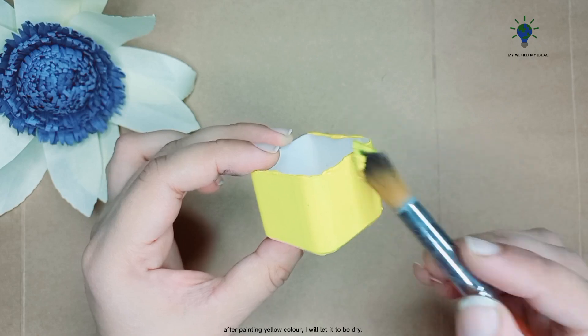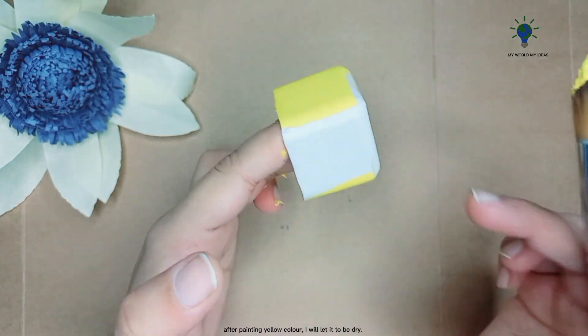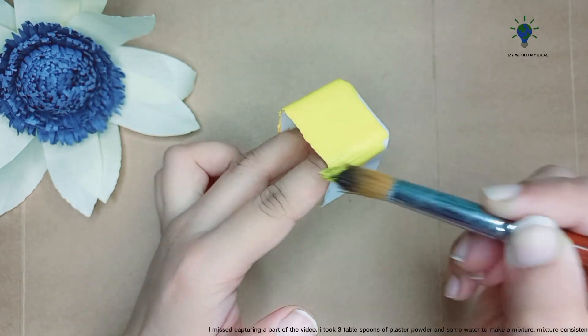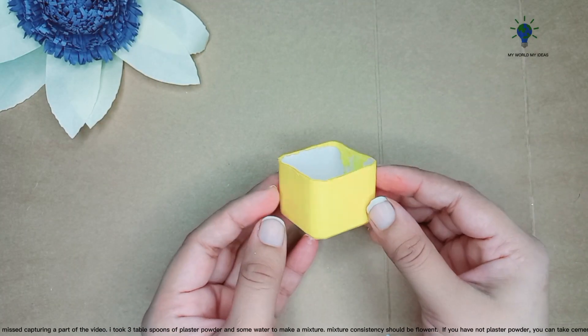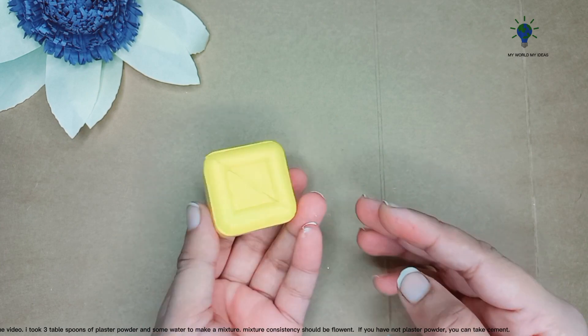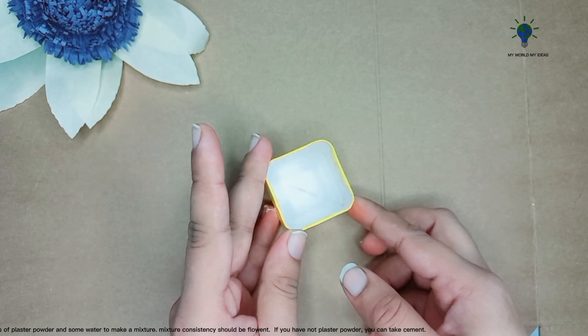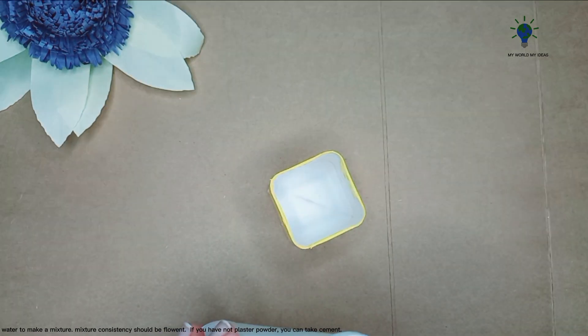After painting yellow color, I will let it dry. I missed capturing a part of the video. I took three tablespoons of plaster powder and some water to make a mixture. If you don't have plaster powder, you can use cement.